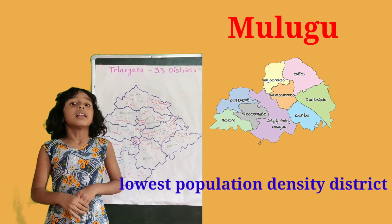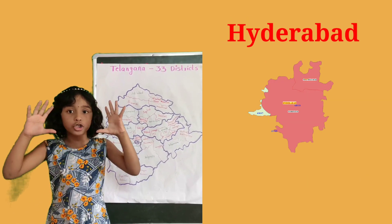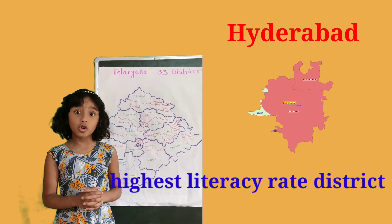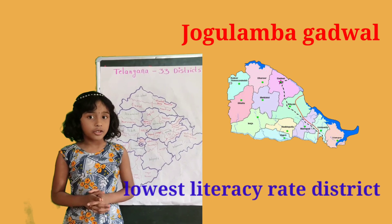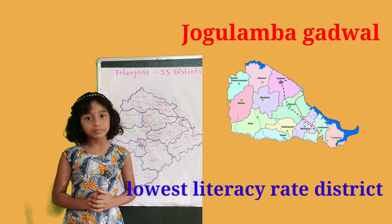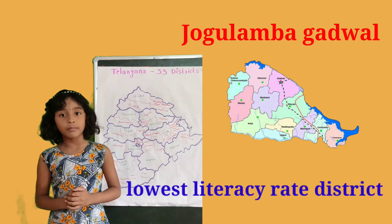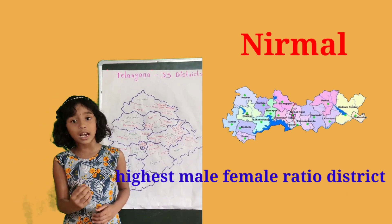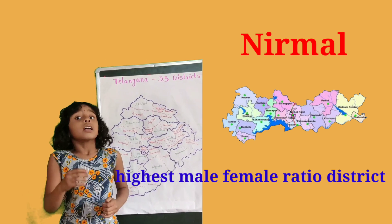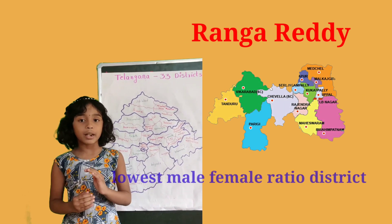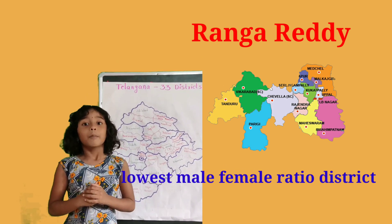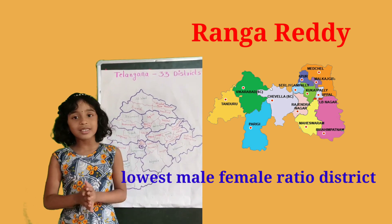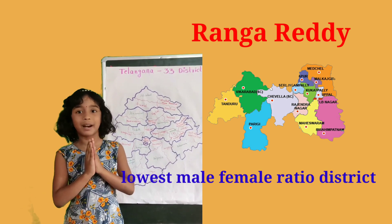Regarding literacy, Hyderabad has the highest literacy rate in Telangana. Jogulamba Gadwal is the lowest literacy rate district in Telangana. For male and female ratio, Nirmal has the highest male and female ratio in Telangana, while Rangareddy has the lowest. Please watch my videos for more educational content. Thank you, please subscribe to my channel.